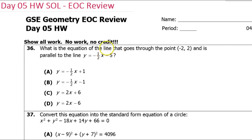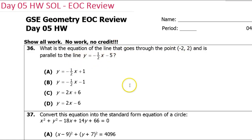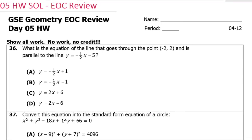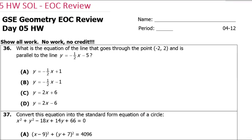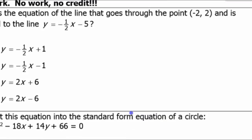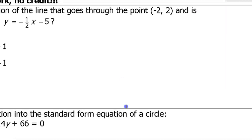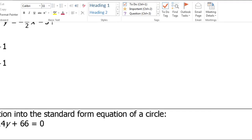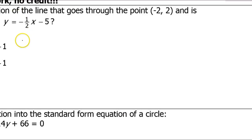We're going to start with problem number 36: what's the equation of a line that goes through the point negative two comma two and is parallel to this line that's given here. I like to break this down into a three-step process. I'll zoom in a bit and make a little chart out of it.